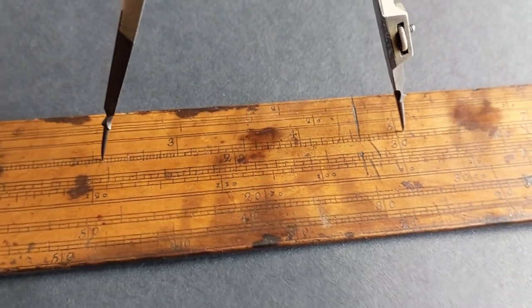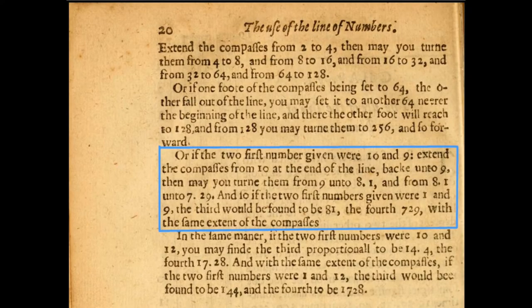This next section I did find rather confusing. The second part made sense to me from the beginning: if the first two numbers were 1 and 9, the third would be 81 and the fourth 729 — you're just taking the distance 1 to 9 and adding it, multiplying 9 by 9 to give 81, and multiplying again to get 729. But that first part — extending the compasses from 10 back to 9 and then turning from 9 onto 8.1 — I couldn't get my head around that at all.